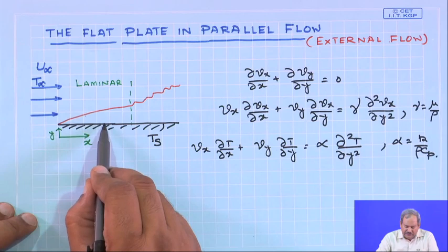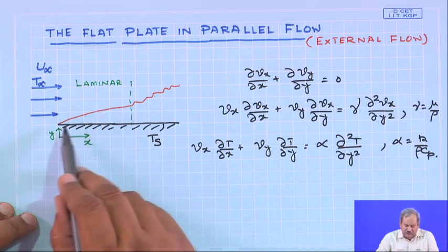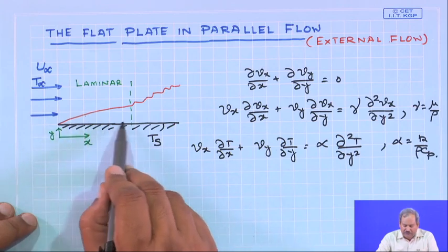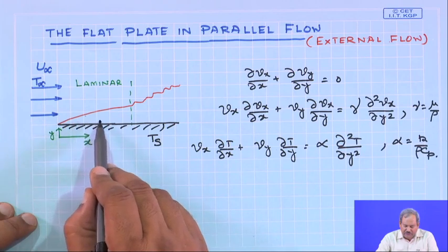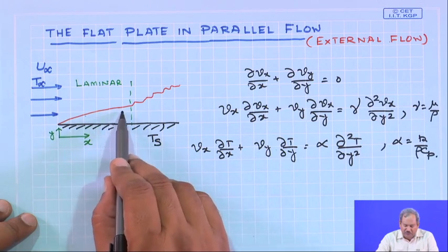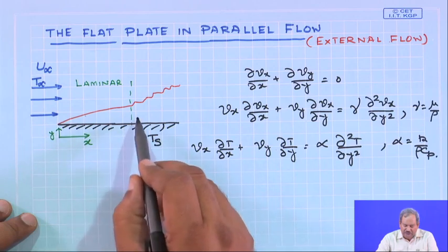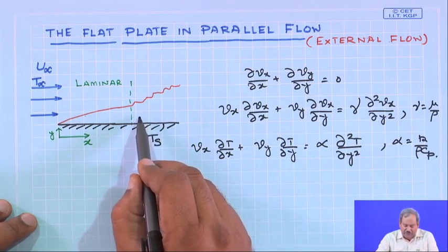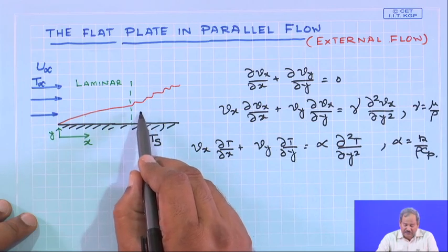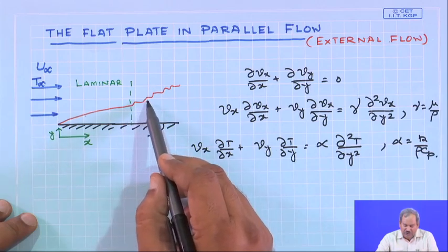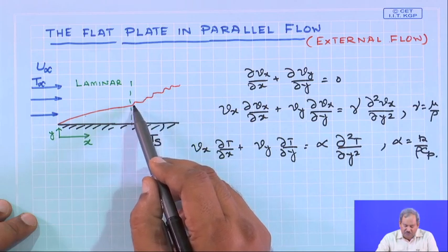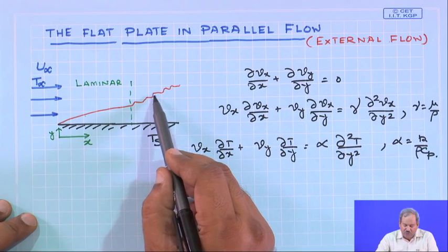For clarity, the boundary layer thickness is greatly exaggerated; the real thickness would be of the order of millimeters, lying very close to the solid surface. Initially, the flow inside the boundary layer will remain laminar, but as we move in the x-direction, after a certain point turbulence becomes present inside the boundary layer and cannot be neglected. This initiation of turbulence changes the boundary layer thickness in a more drastic and irregular fashion.